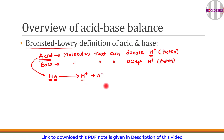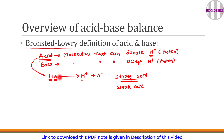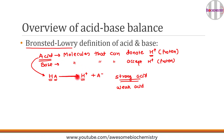There are two different kinds of acids: strong acids and weak acids. Strong acids have a strong tendency to donate H⁺ and undergo complete dissociation, represented by a right-headed arrow. Weak acids have a weak tendency to donate H⁺ and are represented by a reversible arrow.